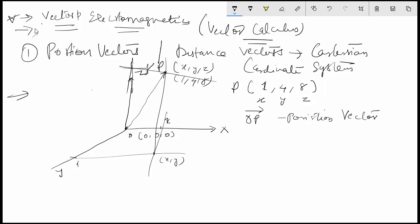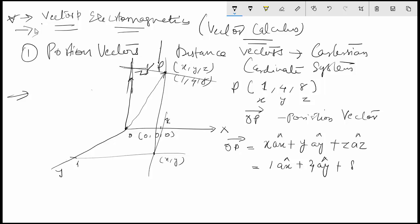To write the position vector in vector form using the Cartesian coordinate system, I write it as X·ax + Y·ay + Z·az. Substituting the values, it becomes 1·ax + 4·ay + 8·az. This is what is known as my position vector.